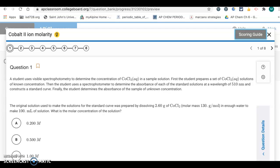Hello, here's the key for the 3.7 to 3.10 quiz on AP Classroom. Alright, so the first question, the original solution used to make the solutions for the standard curve was prepared by dissolving 2.60 grams of COCl2, and here's the molar mass, 130 grams per mole, in enough water to make 100 milliliters of solution.